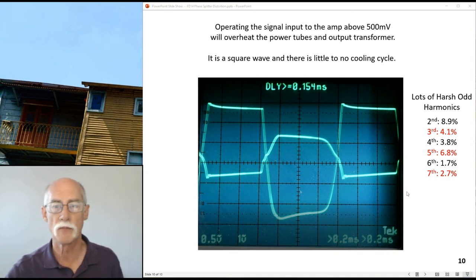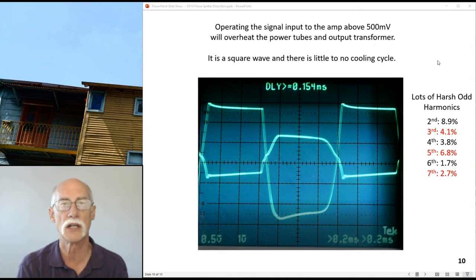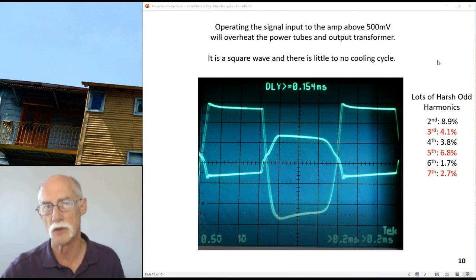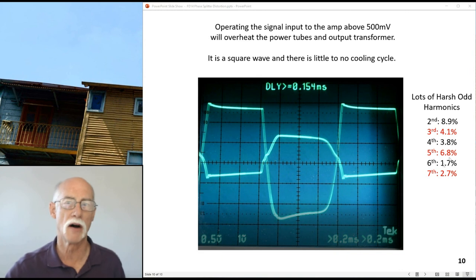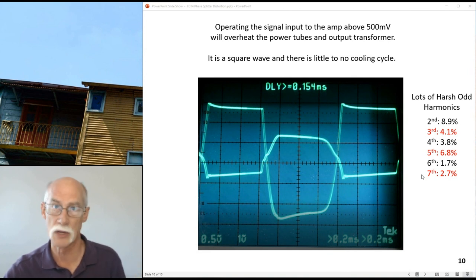At this point, whether it's 500 millivolts or more, the odd harmonics become very harsh, as you can see on screen. I have software where I can pull the waveforms out and do Fourier transform analysis. The second harmonics I'm not too worried about. Look at the third harmonic: when you start going into a square wave, third harmonic becomes 4%, fifth harmonic becomes almost 7%, and seventh harmonic is 3%. This is really a harsh sound.